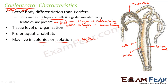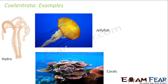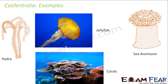An example of Coelenterata living in colonies is corals, which are generally found in marine regions — in seas or oceans. Unlike Porifera, which were immobile because they lacked muscle cells, these organisms are mobile. They generally move by swimming since they live in aquatic habitats.